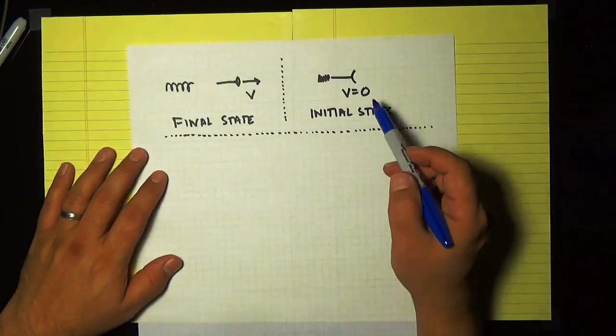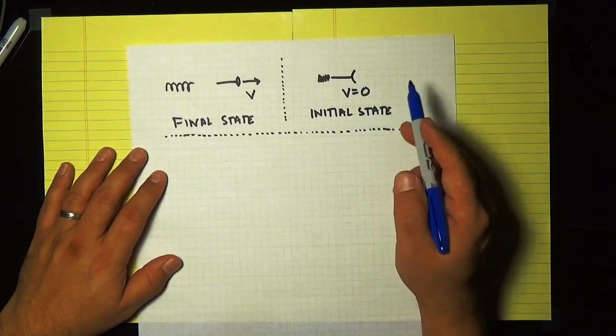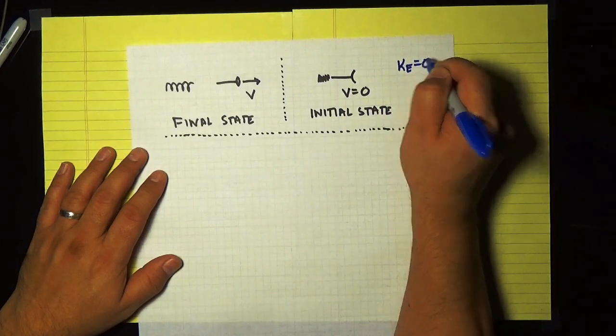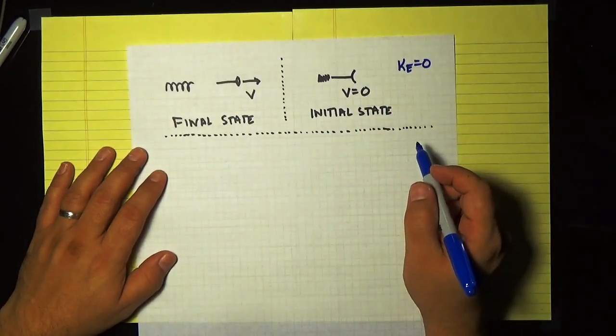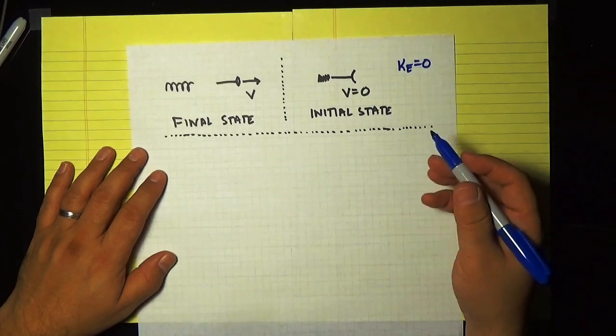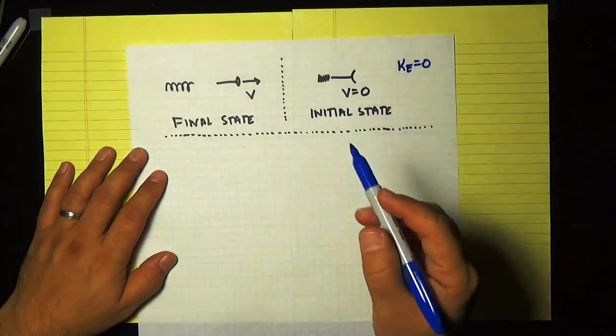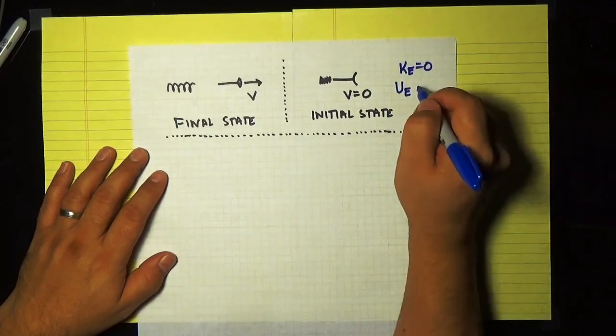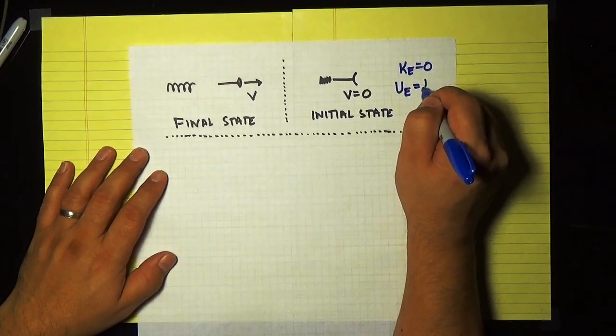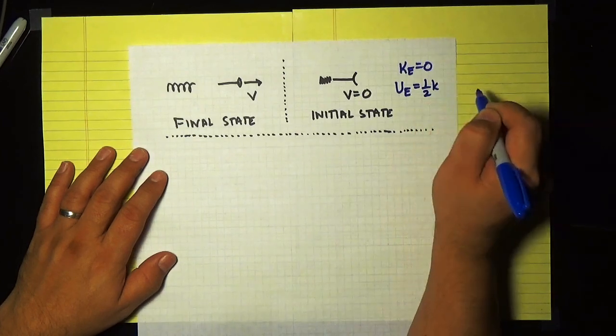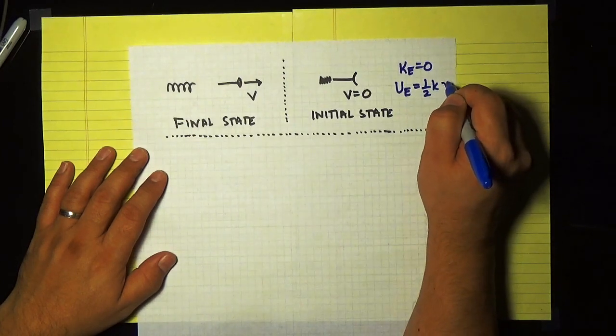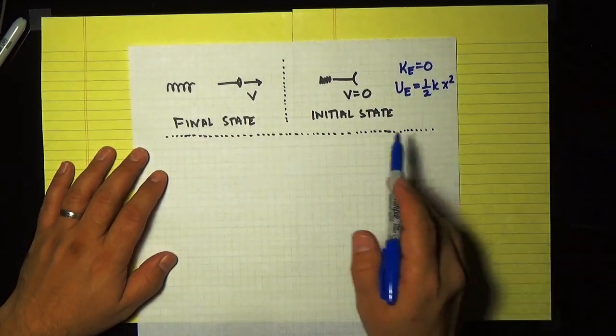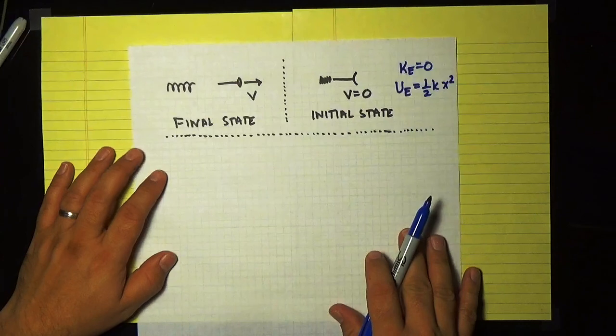So in our initial state the dart is not moving. So automatically we know that the kinetic energy is equal to zero. And the spring is compressed. So all of the energy in the problem is stored in that compressed spring. And we know that the energy, the potential energy of a spring is a half times k times the compression squared. Or this x is the amount the spring has been compressed from its equilibrium length.